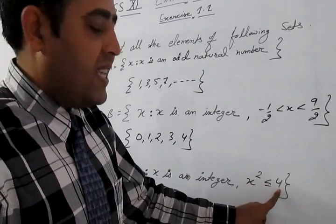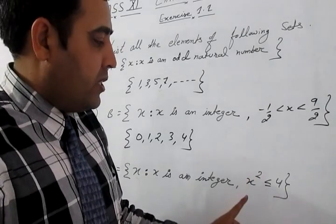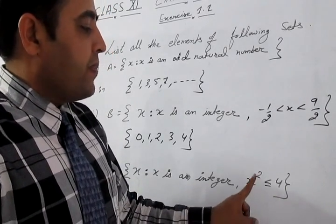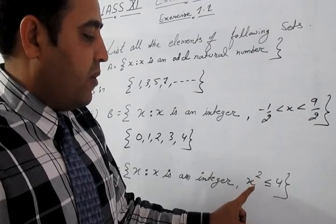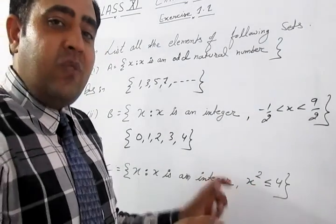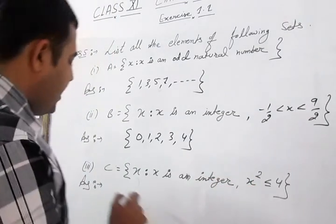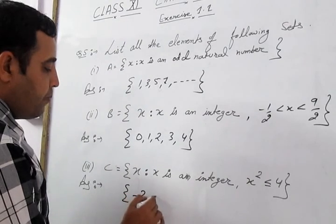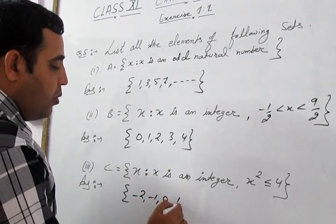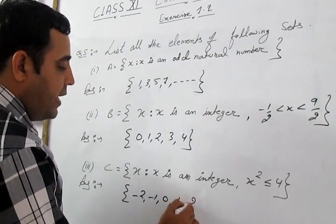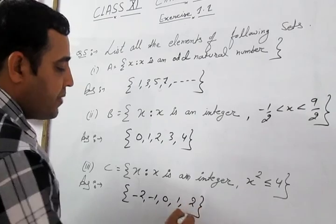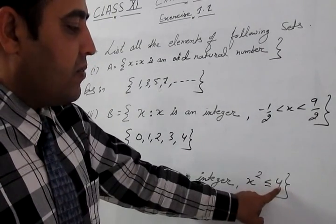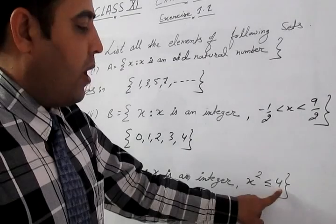Part C: x such that x is an integer and x² ≤ 4. Those integers whose square is less than or equal to 4 are −2, −1, 0, 1, and 2, since the squares of all these numbers are either equal to or less than 4.